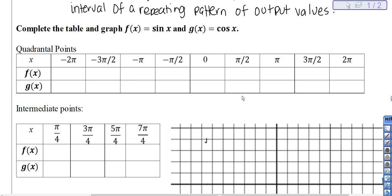Sometimes it's really difficult to draw smooth curves when your paper's facing up and down. A lot of times when I'm graphing sine and cosine functions, I'll turn my paper so that I can see where my hand is going and my hand isn't in my way. So that's just some advice. I'll do my sine function in red and my cosine function in blue.